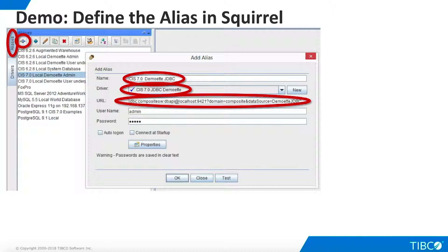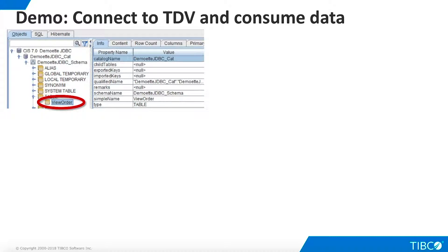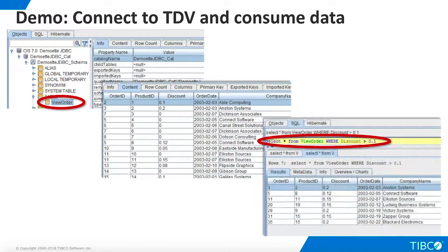Datasource is the name of the TDV database we want to access. When we published our resource earlier, we named this database DemoJDBC. Now we can click Test, test our connection to the database, and verify that the connection works. Click OK and the alias is defined in Squirrel. Thanks to the TDV JDBC driver, TDV presents itself to our data visualization tool as a SQL-compliant database. We can browse to the view order table and see its metadata, view its contents, and execute SQL statements against it. Our demo is complete.